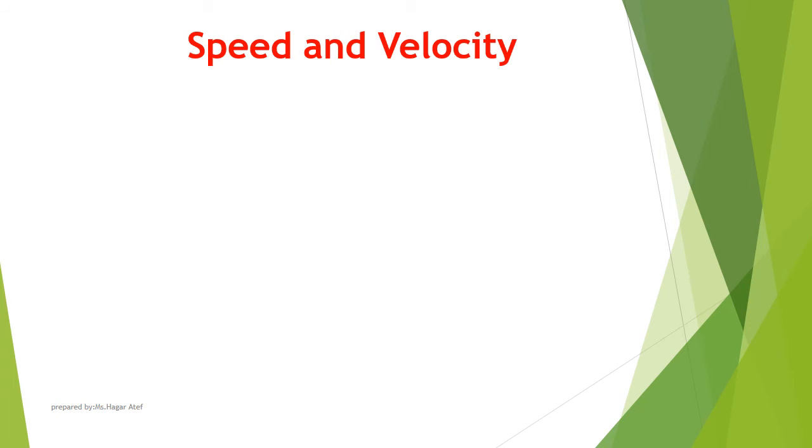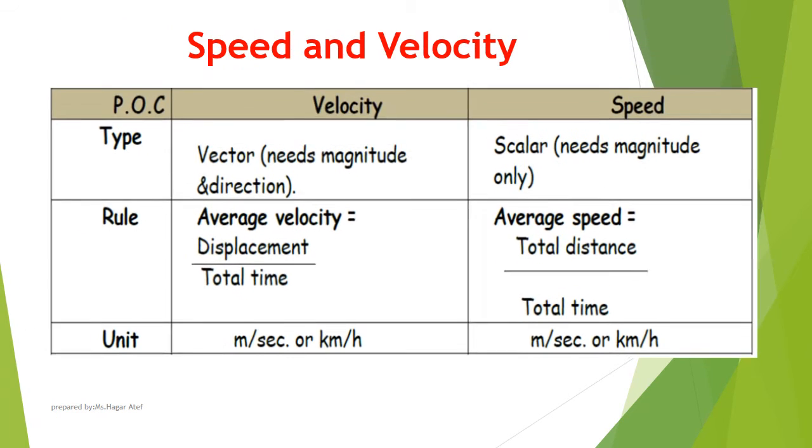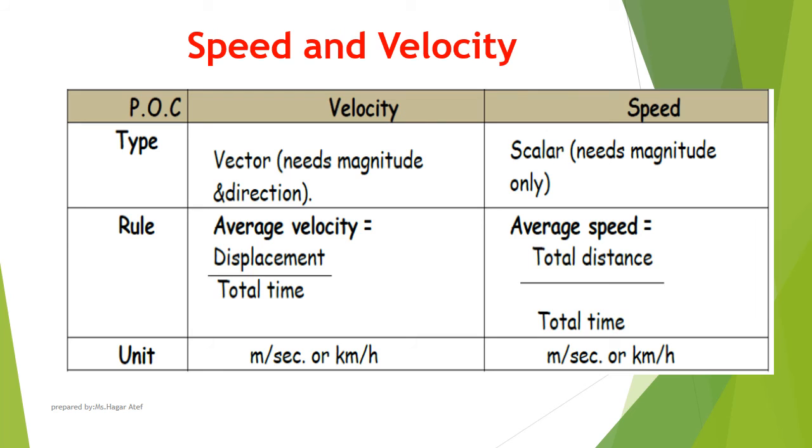Speed and velocity. The velocity is the speed in a given direction when the body moves in a straight line in one direction. So, speed is scalar, needs magnitude only, and velocity is vector, needs magnitude and direction.